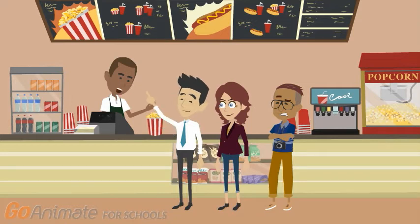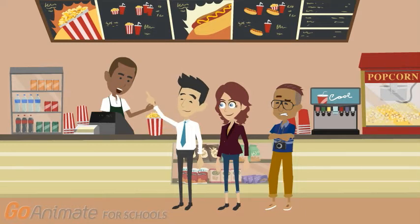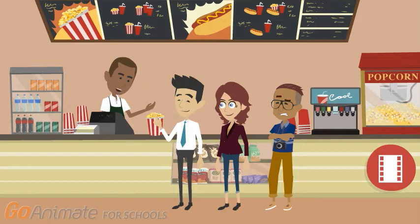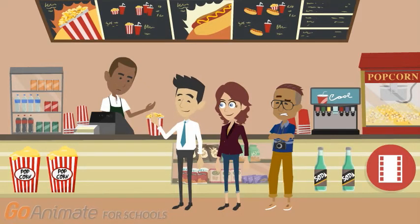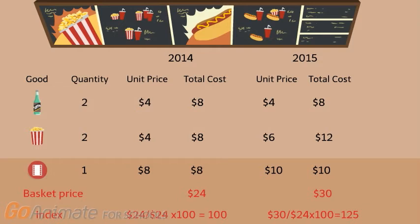To illustrate how the CPI works, let's build a price index using just three goods. Imagine that when you go to the movies, you notice you are spending more for that outing than you did last year. You decide to construct a price index called the EPI — the Entertainment Price Index. For this example, a typical night at the movie theater includes one movie ticket, two boxes of popcorn, and two soft drinks. This is the basket of three goods included in your EPI. The first four columns show EPI data for the first year, 2014, including the quantities: two popcorn, two sodas, and one movie ticket.